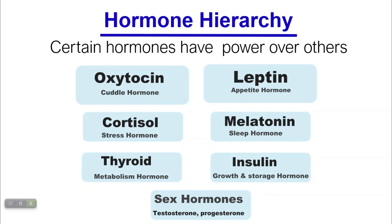For example, when there's insulin resistance, usually cortisol resistance and leptin resistance started before the insulin resistance. Today we're going to talk about cortisol briefly, because cortisol is made in the same pathway as progesterone, testosterone and oestrogen — it's made from pregnenolone — and because it's so important that we die without it, our bodies are always going to preferentially make cortisol.